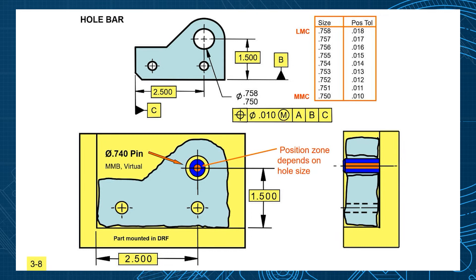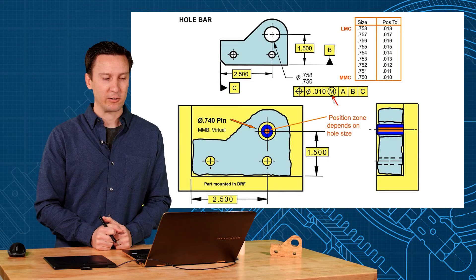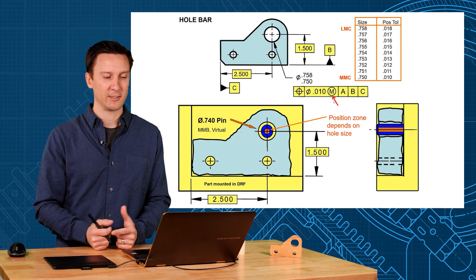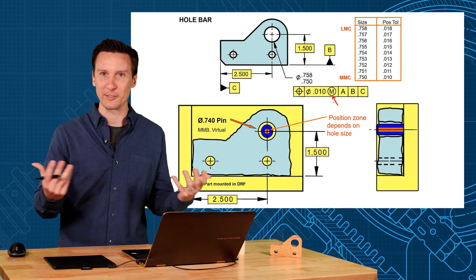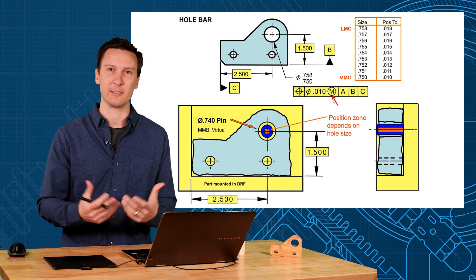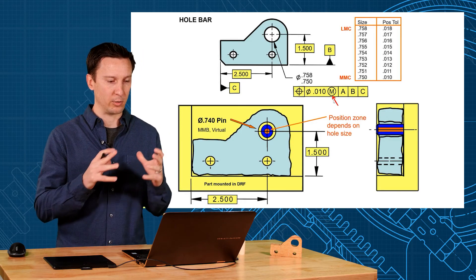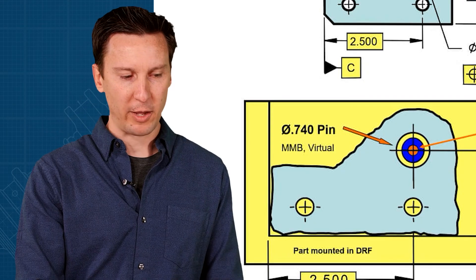It's often called bonus tolerance in the industry. I don't know if you've heard that term before. Does that hole have bonus tolerance? What they're asking is, doesn't it have an MMC modifier? They don't actually call it bonus tolerance on the standard. In the standard they call it departure from MMC tolerance. It doesn't sound as much fun as bonus tolerance, does it? When somebody says you're getting a bonus, it gets you all excited, right? So I like calling it bonus. A lot of people in the industry call it that. It's a slang term, but I think it describes it so well. You get what you used to have plus a little extra bonus.